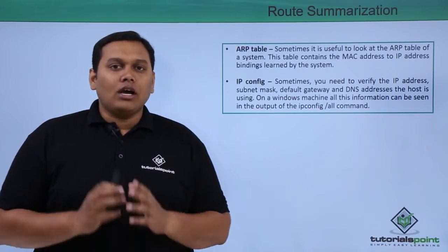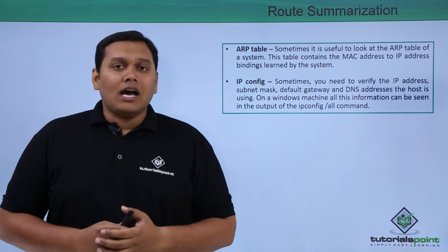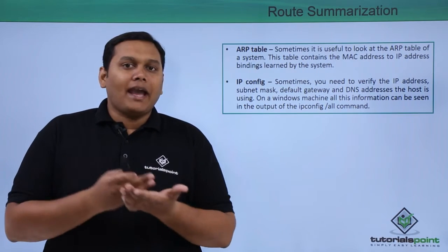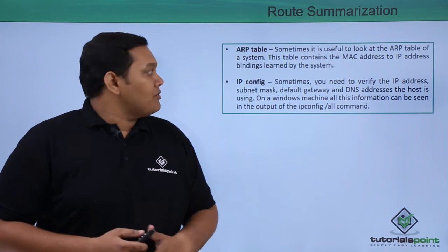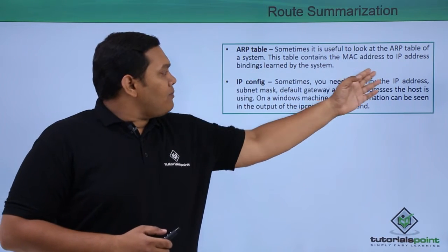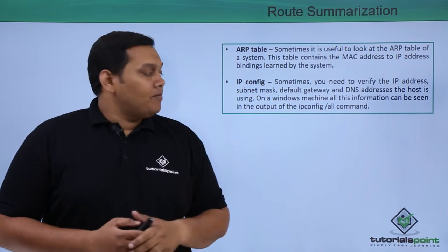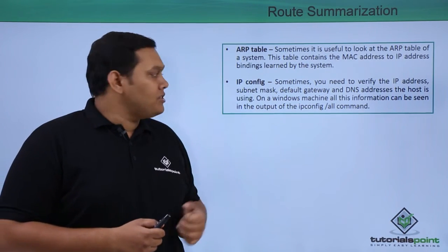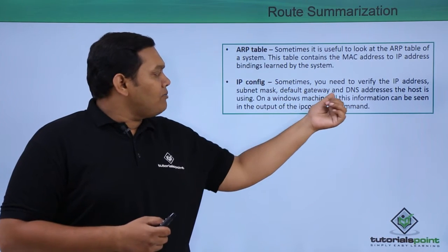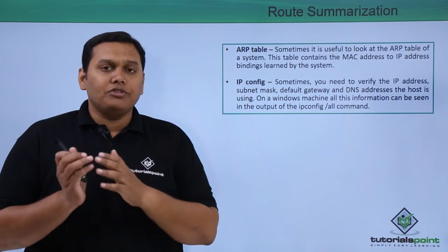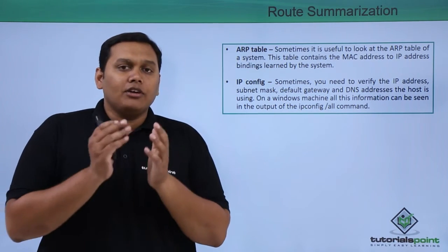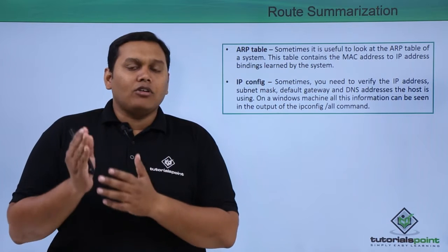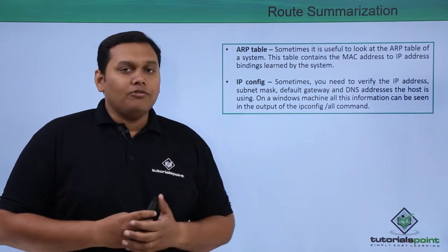The ARP table is useful to look at because it is maintained by ARP packets and maps IP addresses to MAC addresses — that is, Layer 3 addresses to Layer 2 addresses. The MAC address and IP address information are bound together in this table. IP config is also useful when you need to verify the IP address, destination address, MAC address, default gateway, subnet mask, and DNS address of the host. On a Windows machine, open a command prompt and use ipconfig to find out the details of the host.